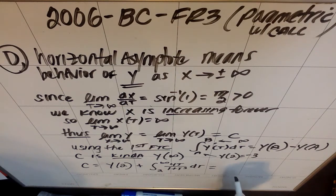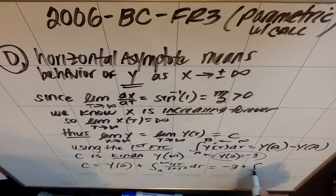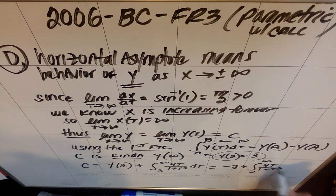So what the AP was specifically looking for was that you recognize this negative 3 was a value, so negative 3 plus this integral. And they did warn you that the expression would involve an improper integral, meaning there would be an infinity as a bound. So that's what they wanted for C.